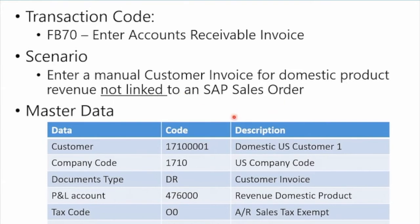For the master data, we're going to use a domestic U.S. customer, company code 1710 — a U.S. company. The document type will default to DR, which is the standard SAP type for a manual customer invoice. We're going to use a four-series revenue domestic product GL account for the P&L side for the revenue. The tax code we're going to pick is tax exempt, and the tax jurisdiction code is a dummy one for California, with a profit center for product A. So let's jump into the demo.